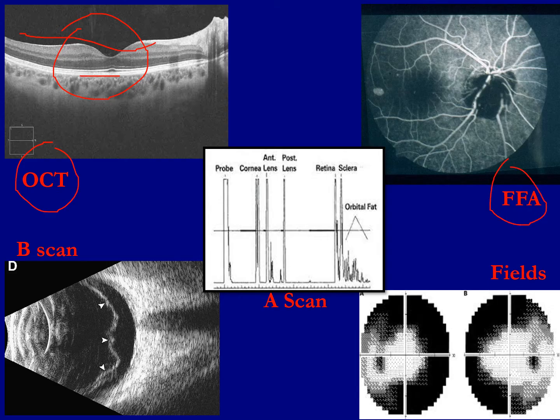In the FFA, you can see the blood vessels because a dye goes through the blood vessels. And if there is any leakage, that will be obvious in the FFA. This is the A scan — A scan is for axial length. This spike is from the cornea and this spike from the retina, so the distance between the two is the axial length of the eye.